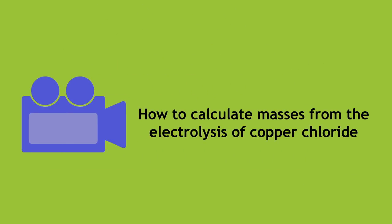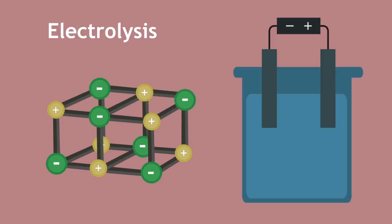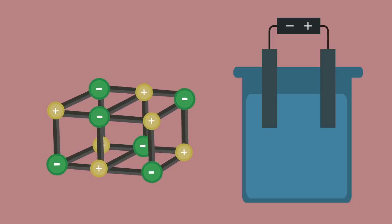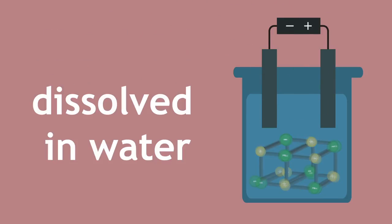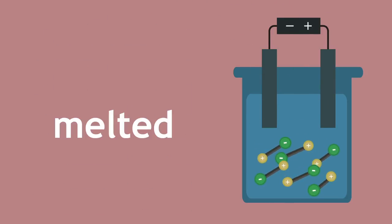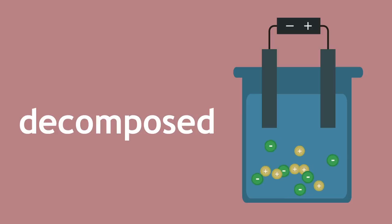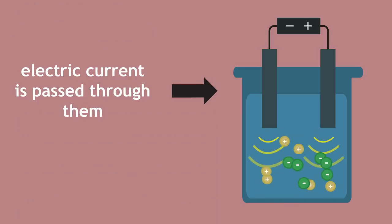In this video we are going to learn how to calculate masses from the electrolysis of copper chloride. Electrolysis is a process by which ionic substances that have been dissolved in water or melted are decomposed, broken apart.